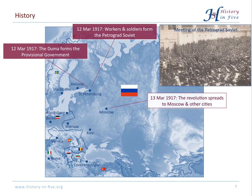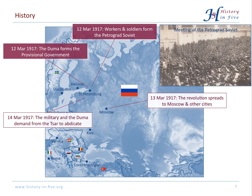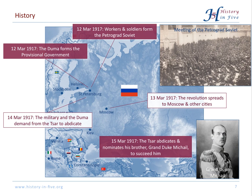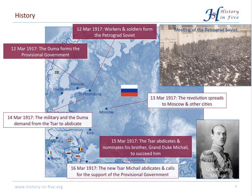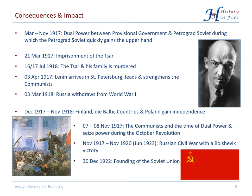The military and the Duma demanded that the Tsar abdicate, but he was hesitant. However, he had to accept there was nothing he could do, and he nominated his brother, Grand Duke Michael, who refused to rule as the next Tsar and called for support of the Provisional Government. That means the Romanovs had lost the monarchy in Russia. During the next half year there was a dual power between the Provisional Government and the communists of the Petrograd Soviet, and then very quickly the communists won the upper hand. The Tsar was imprisoned, and in July 1918 he and his family were murdered.